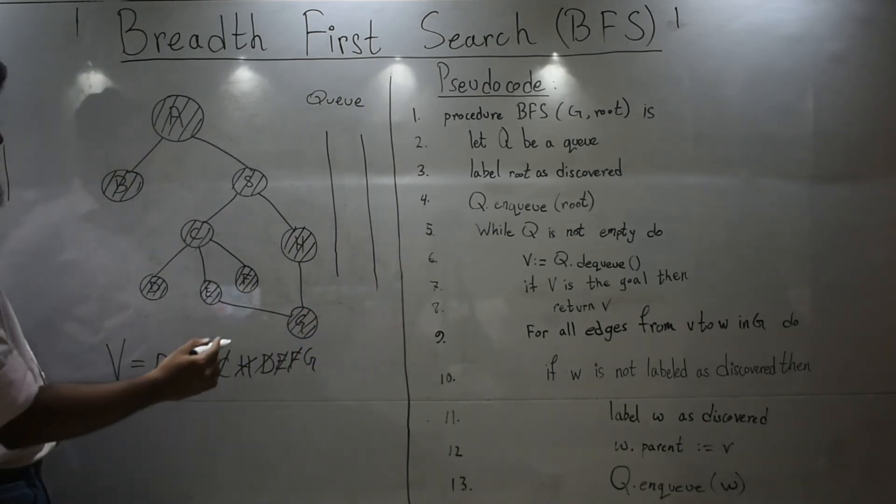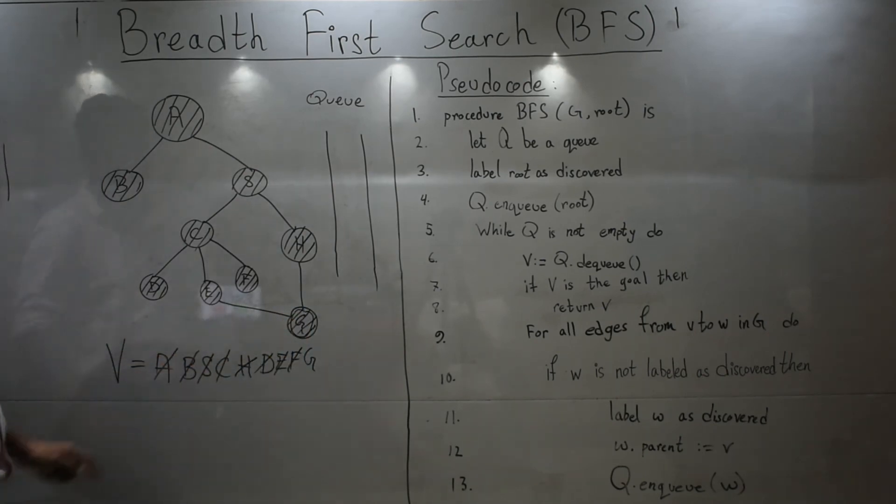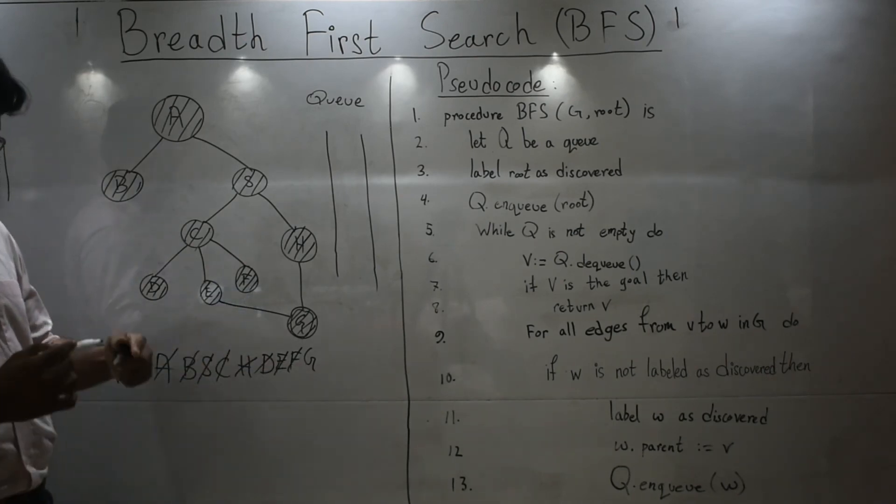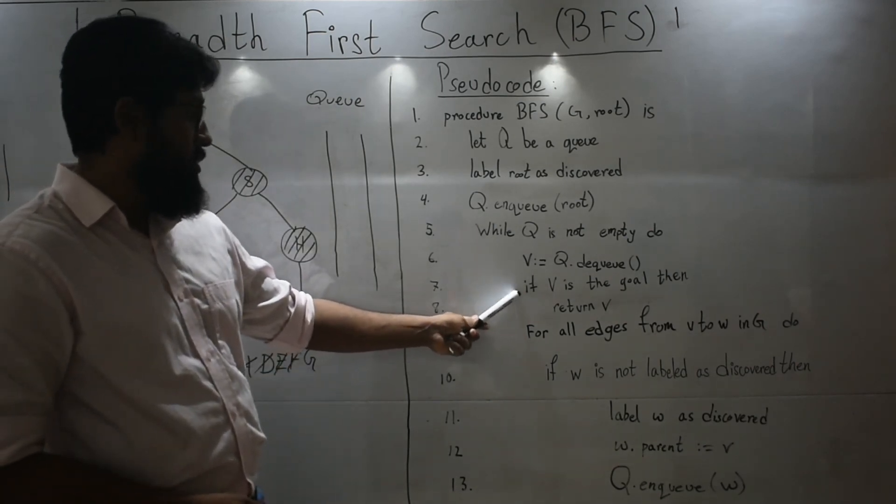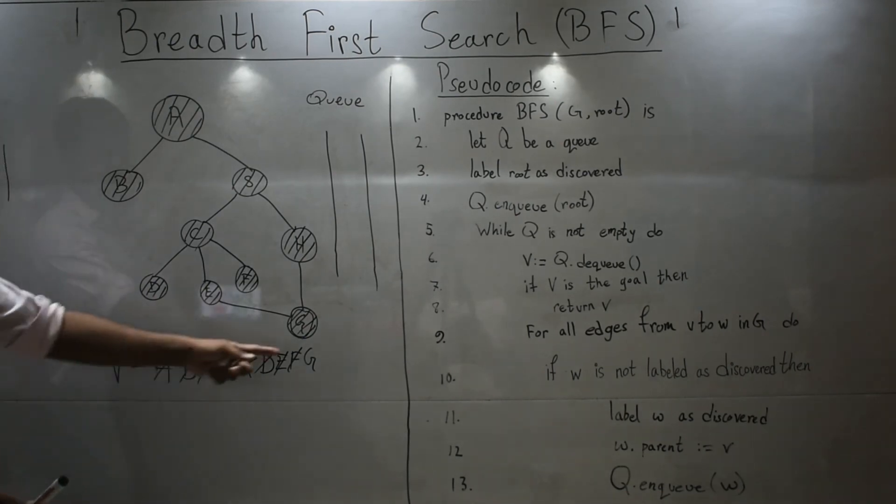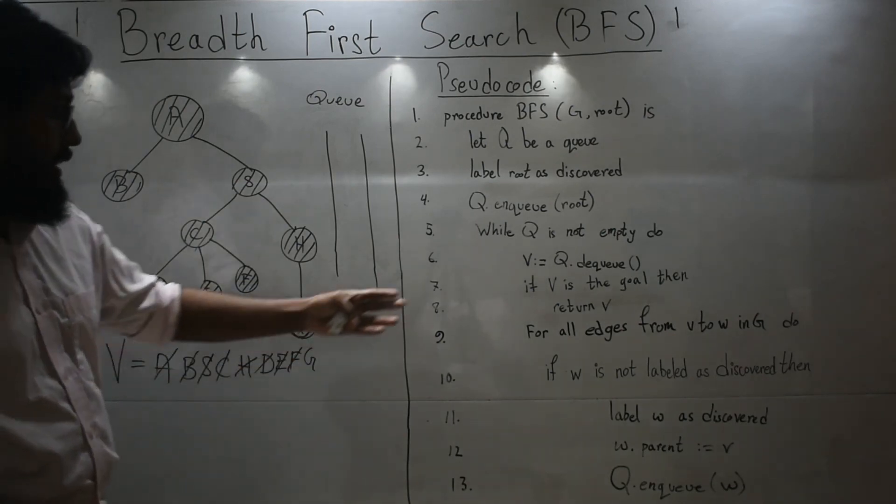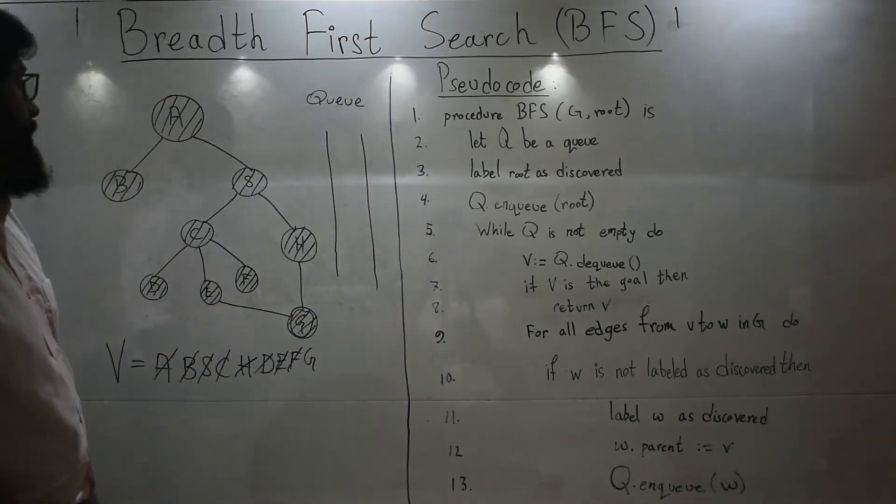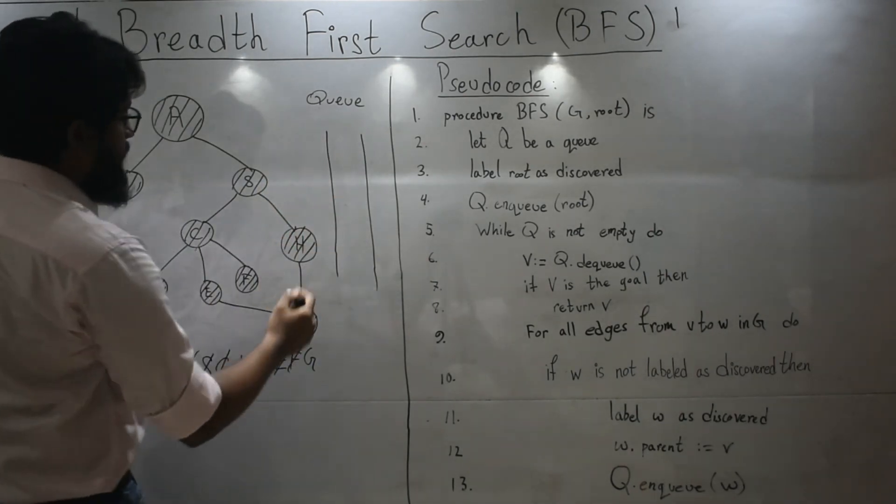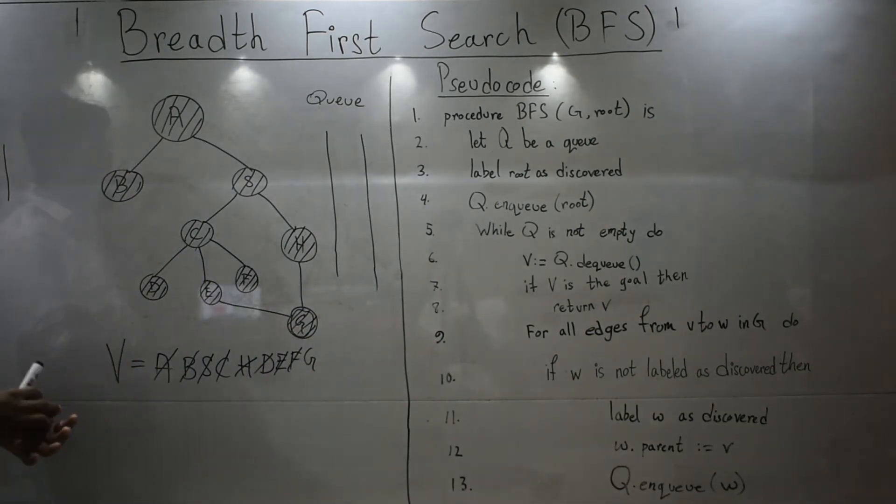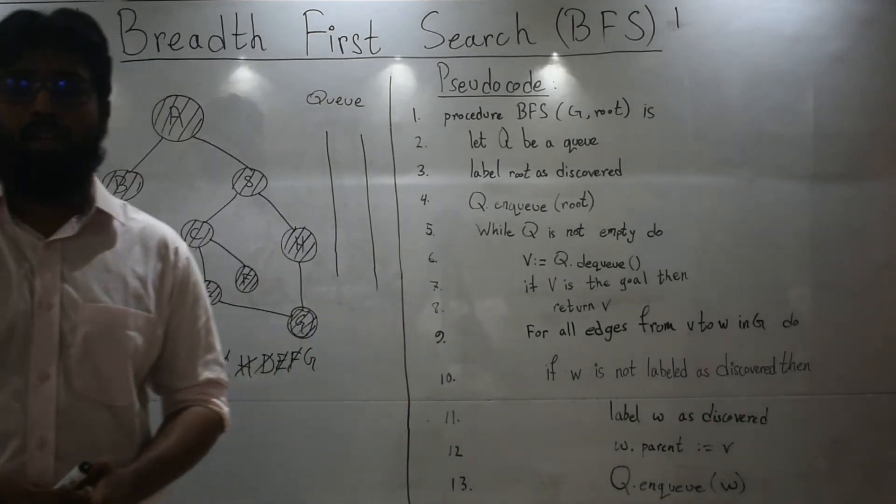Now if we consider G to be our goal node, here we have reached G by traversing all other nodes. So if G is my goal node, this condition will be true and the value will be returned as G. So return G. And after returning G, simply my procedure will stop. And my stack has also been empty. So either ways you have reached a conclusion. So that's all about BFS. Thank you.